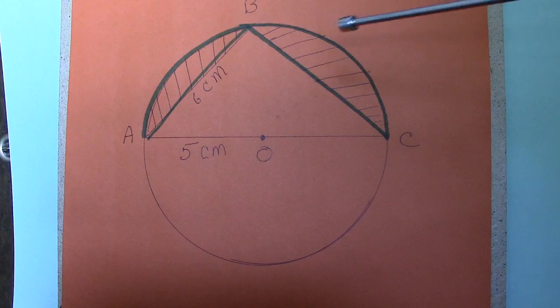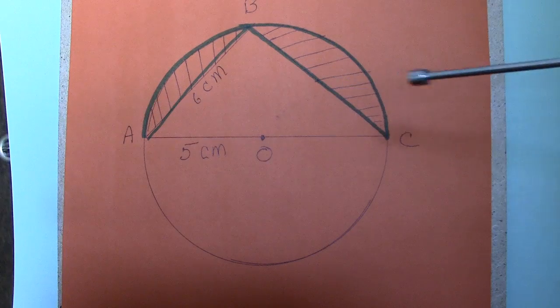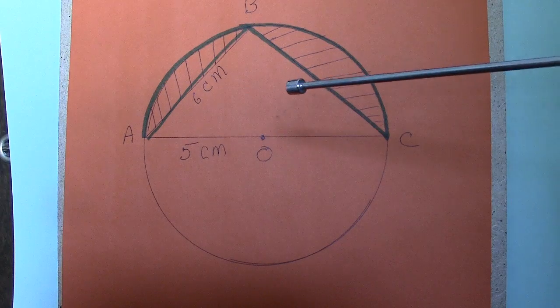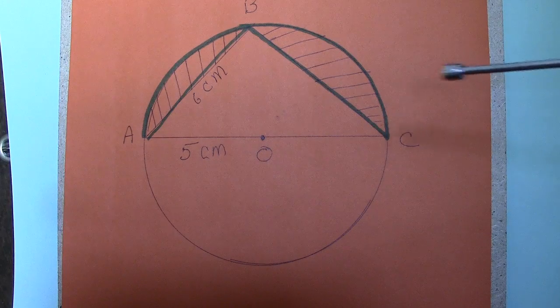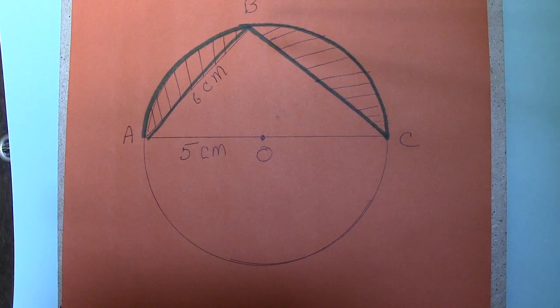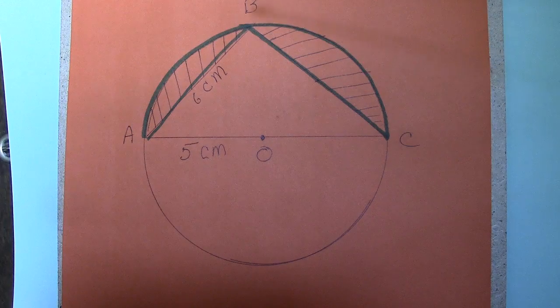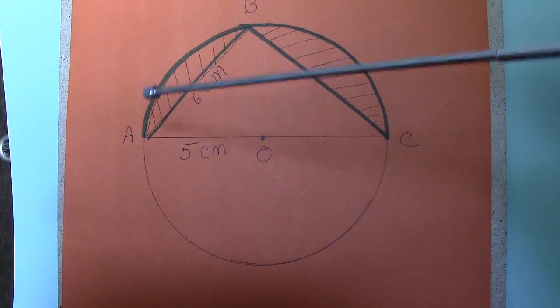We do not know this length. We do know that the side AC of the triangle is 2 times the radius. So the side AC is 10. This side is given to be 6 cm. And we need to calculate this arc, the arc ABC.